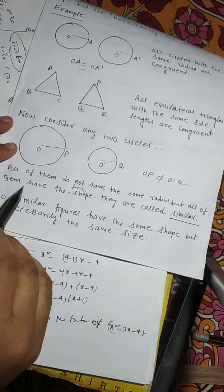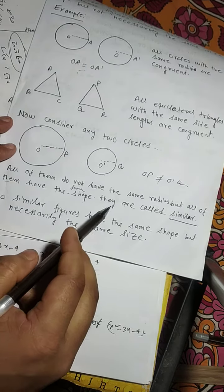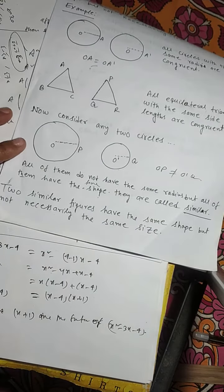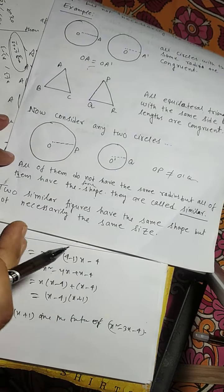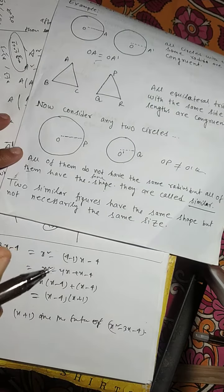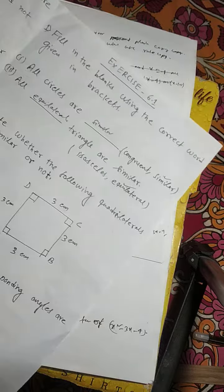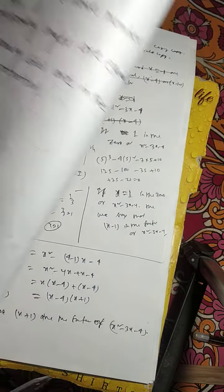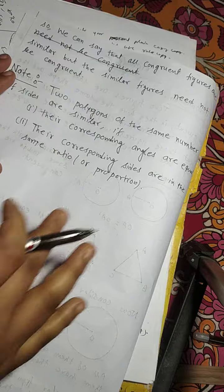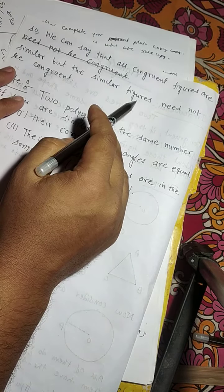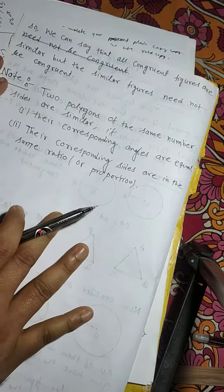All of them have the same shape. They are called similar. Two similar figures have the same shape but not necessarily the same size. We can say that all congruent figures are similar, but similar figures need not be congruent.